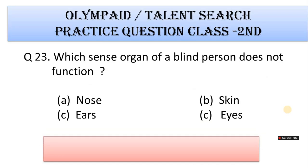Number 23: Which of the following is a sense organ? A. Nose, B. Skin, C. Ear, D. Eyes. Correct answer is Option D. Eyes.